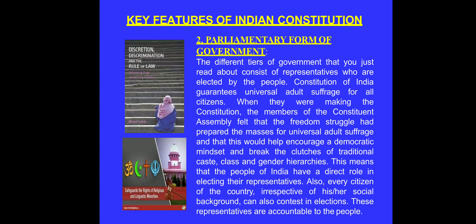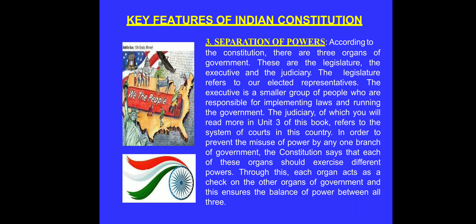While making the constitution, the members of the Constituent Assembly felt that there should be universal adult suffrage, which could encourage a democratic status of our country where each and every person has a role to play in electing the government, irrespective of their social backgrounds. They can also contest elections, and these representatives are accountable to the people. This is called the parliamentary form of government.